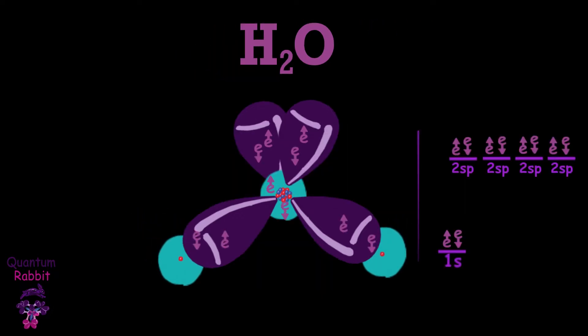But the oxygen atom attracts electrons much more strongly than hydrogen atoms do with a single proton. This inequality in the force of attraction makes the electrons of the hydrogens spend more time closer to the oxygen nucleus and less time around the hydrogen's nucleus.